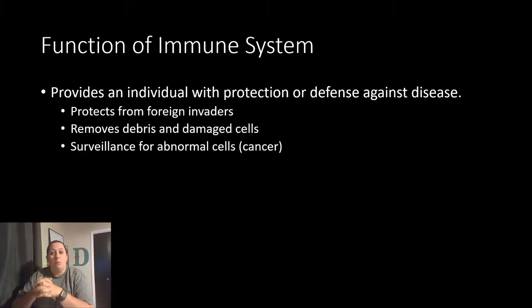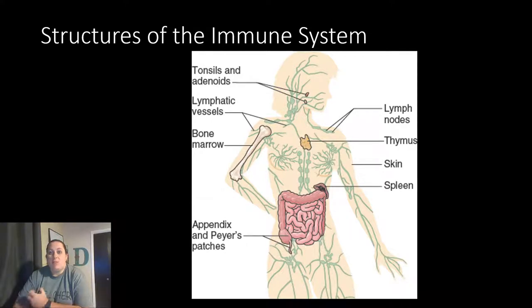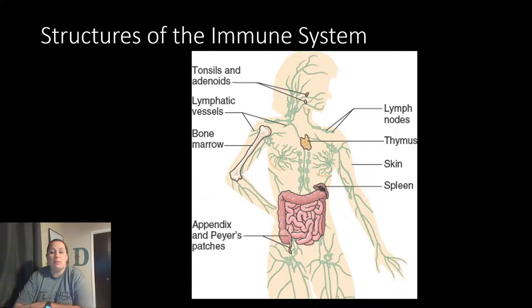When we look at the structures of the immune system, these are also a lot of the structures that are part of the lymphatic system — they kind of work together. One of the things the lymphatic system does is it has vessels that run all through the body, and they're there to help pull in any extra fluid that may get into or in between your tissues. As they do this, this fluid is going to get pumped back eventually to the heart, but it'll get filtered before that point.